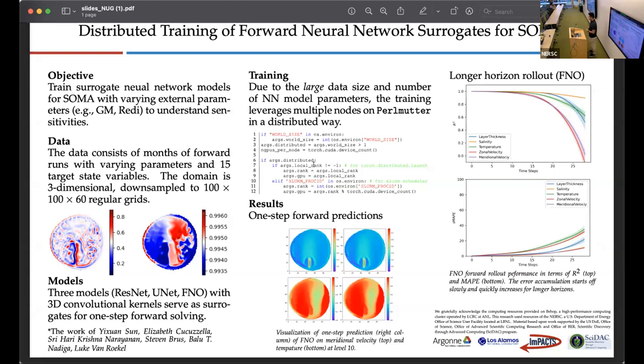We generate the data using the SOMA simulations, which is done on Perlmutter CPUs. The generated data set is three-dimensional, and we re-grid it from the mesh to a voxelized representation for convenient machine learning tasks. One data sample in space would be 100 by 100 by 60, and the plots showing here are on the left the meridional velocity, and on the right the temperature.